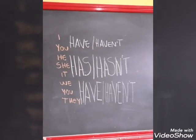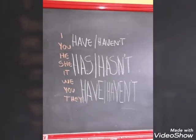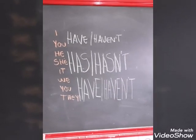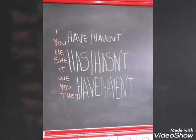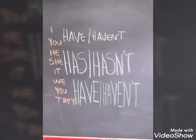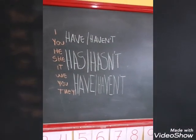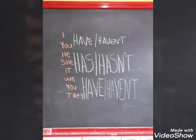Começando aí uma estrutura do presente perfeito continuado. Estão aqui os pronomes: I, you, he, she, it, we, you, they. Percebam que somente a terceira pessoa do singular — ele, ela ou uma coisa — aceita o verbo has ou então hasn't, que nesse caso será um auxiliar. Então a estrutura do presente perfeito continuado começa assim.